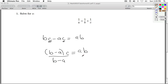Then I divide both sides by that coefficient. And I get C is equal to A, B over B minus C.